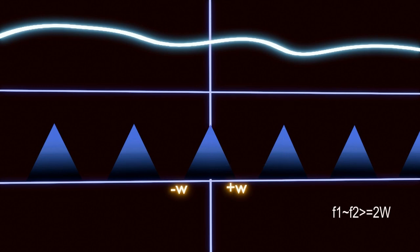This condition must be satisfied in order to successfully transmit and receive a signal. Now let's see what happens when the Nyquist theorem is not followed, meaning the sampling frequency is less than 2W.